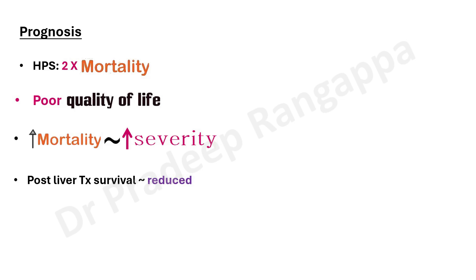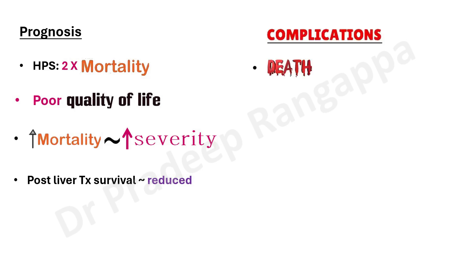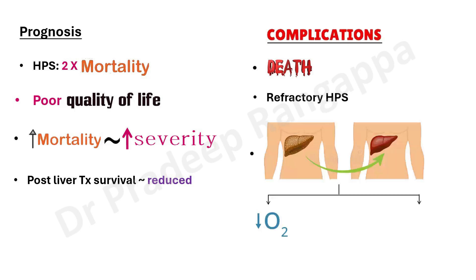Post-liver transplant survival has also been shown to be somewhat lower when hepatopulmonary syndrome was the indication for transplant, making it an important prognostic marker. Complications include death if no liver transplant is done. Type 2 patients are refractory to oxygen, carrying a very bad prognosis. Even post-transplant, patients are at risk of hypoxemia or portopulmonary hypertension, meaning morbidity can extend into the post-transplant setting.